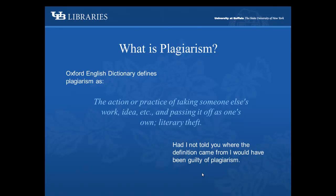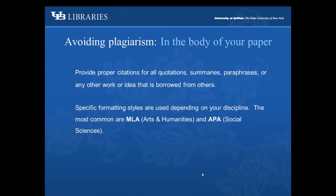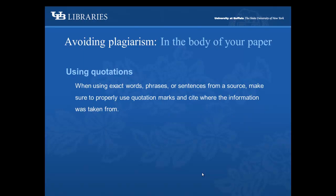What is plagiarism? To avoid plagiarism in the body of your paper, provide proper citations for all quotations, summaries, paraphrases, or any other work or idea that is borrowed from others. Specific formatting styles are used depending on your discipline. The most common are MLA for Arts and Humanities and APA for Social Sciences. When using exact words, phrases, or sentences from a source, make sure to properly use quotation marks and cite where the information was taken from.